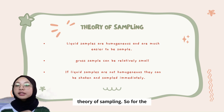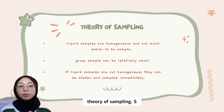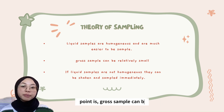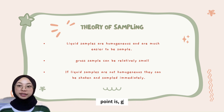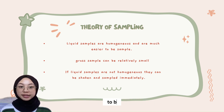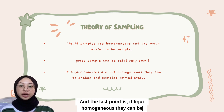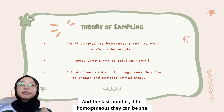Next is the theory of sampling. For the theory of sampling, liquid samples are homogeneous and are much easier to be sampled. The second point is the gross sample can be relatively small — the reason being that small gross samples are easier to analyze. The last point is if liquids are not homogeneous, they can be shaken and sampled immediately.